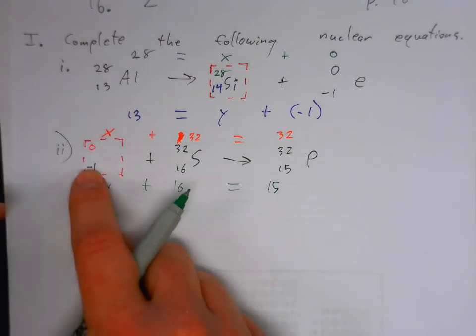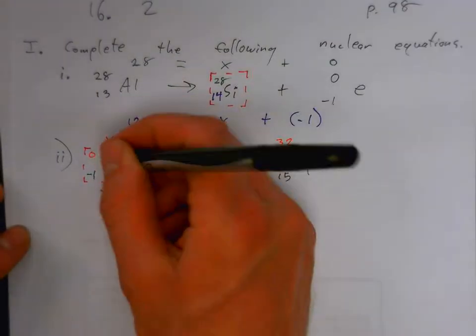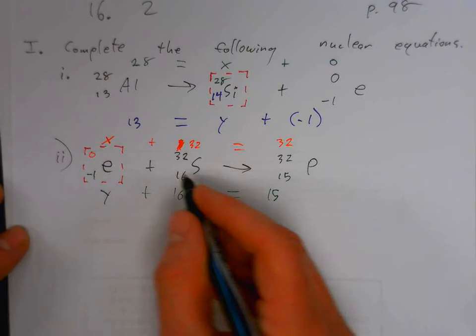In this case we can see that zero over negative one is an electron, so it was a beta particle that bombarded this reaction.